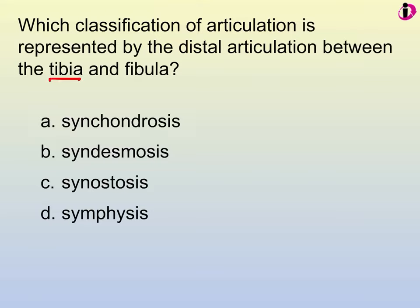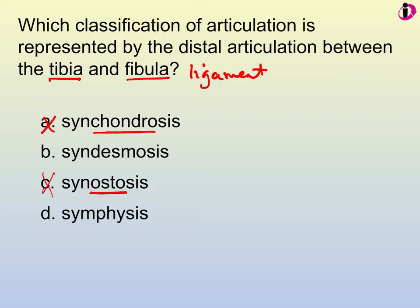Through process of elimination: the tibia and fibula are held together by a ligament. A ligament is not cartilage, so the 'chondro' root doesn't apply. Synostosis involves bone — that's not it. We're down to syndesmosis and symphysis. Since the pubic symphysis is a fibrocartilage joint, the answer is syndesmosis.